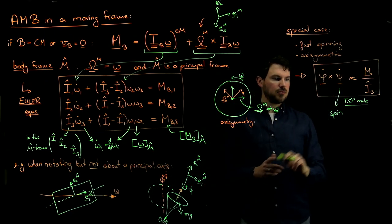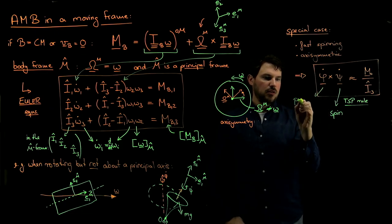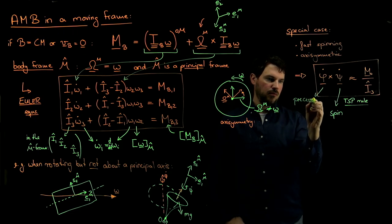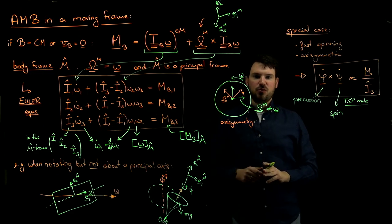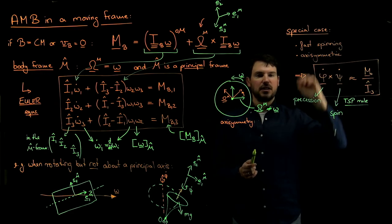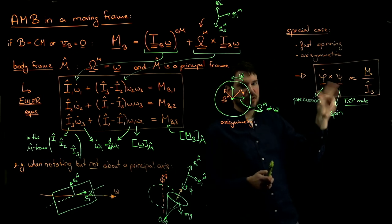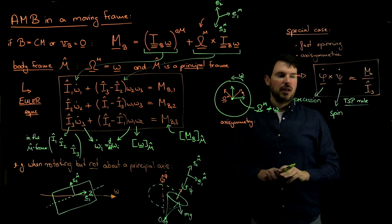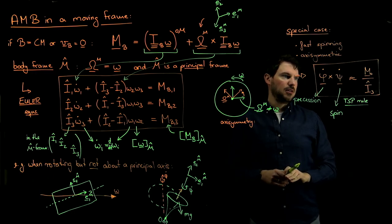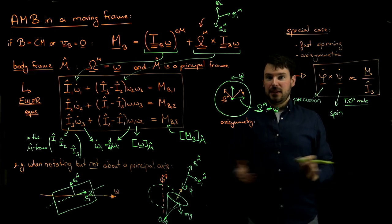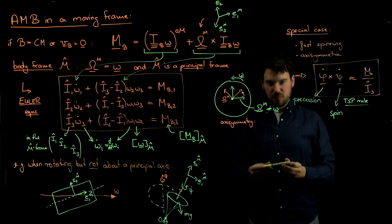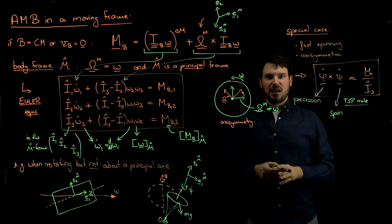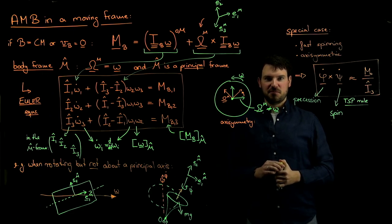So whenever from now on you see something spinning fast, we don't necessarily have to use the full-blown Euler equations — we can use the TSP rule. It's very handy if you just want to figure out what direction the torque is acting on a rotating system. That's pretty much it for week 9. We've arrived more or less at the end of our rotating non-inertial frame discussions, and there are plenty of nice examples in the exercises on rotating frames. Thanks and ciao!